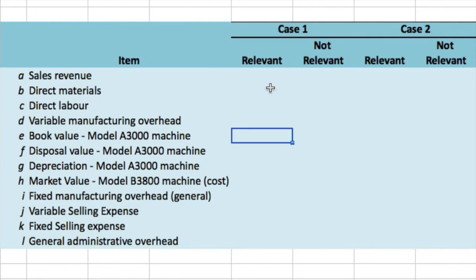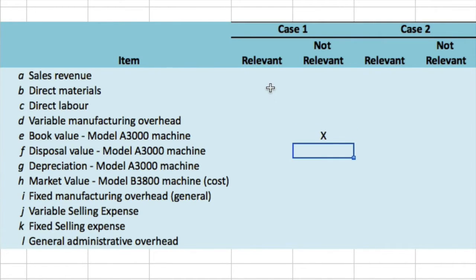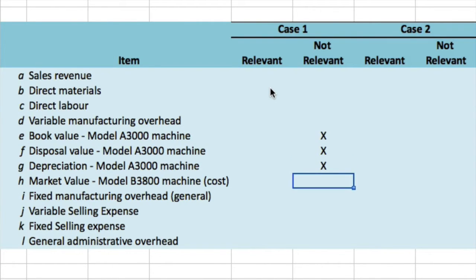The existing machine is not going anywhere. So as far as the book value of the old A3000 — it's sunk, it's irrelevant. Disposal value? We're not disposing of it, so it's irrelevant. Anything to do with the A3000 machine we can ignore, because we're keeping it under both situations. If we don't get the new machine, we have the A3000; if we do get the new machine, we still have the A3000. So those costs are either sunk or will be the same under both situations.